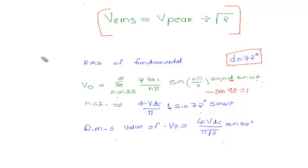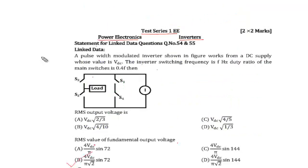To find the RMS value, we divide the peak value by root 2. The RMS value of fundamental output voltage becomes 4Vdc / (π√2) × sin(72°). This is the answer, which corresponds to option B3. In this session, we have studied how to calculate the RMS value of fundamental output voltage.